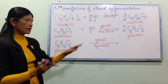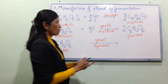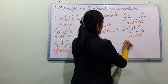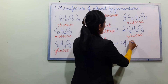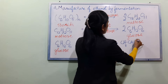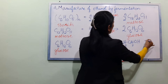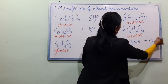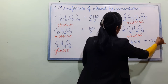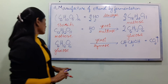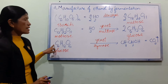Yeast enzyme acts on glucose. Glucose gives ethanol, CH3CH2OH, which is CO2, a gaseous by-product.